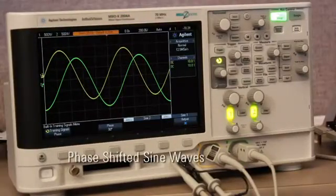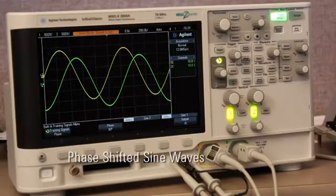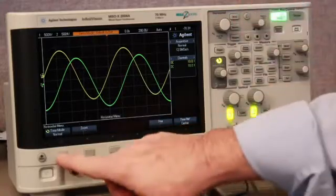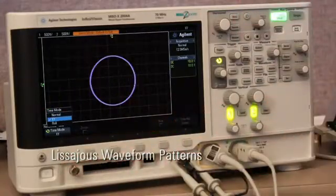The phase-shifted sine signals are used to teach students how to make delta time and phase measurements. These same signals are also used to teach students about Lissajous waveform patterns.